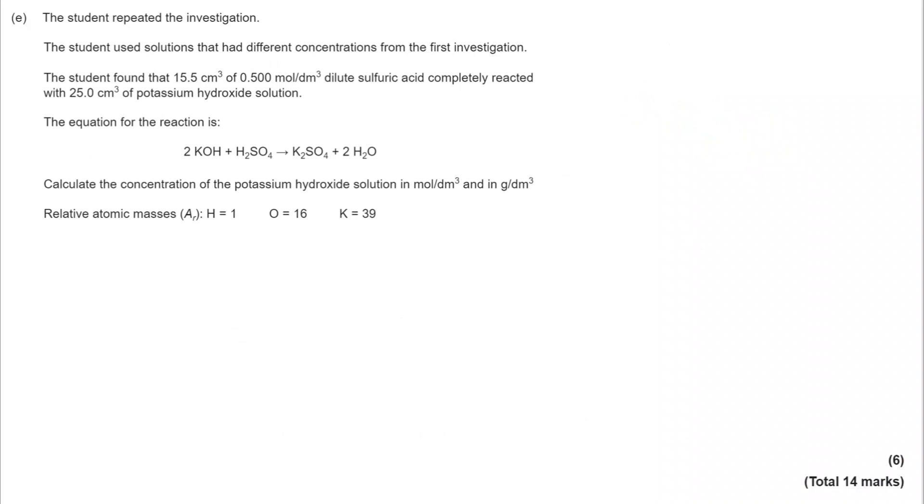Finally for part E. The student repeated the investigation. They used solutions with different concentrations. The student found 15.5 cm³ of 0.5 molar dilute sulfuric acid completely reacted with 25 cm³ of KOH. The equation for the reaction we can see here. Calculate the concentration in moles per decimeter cubed and in grams per decimeter cubed. It's a titration calculation. So you draw out the table and see the n ratio.